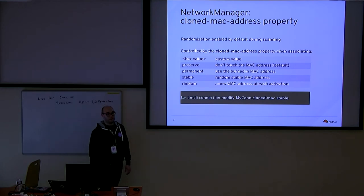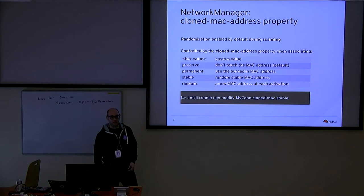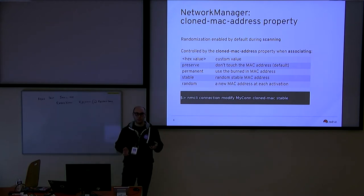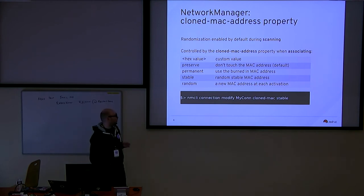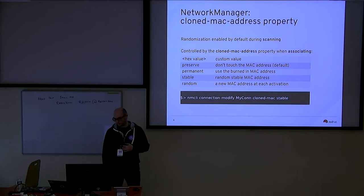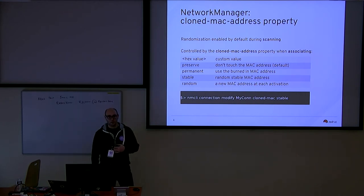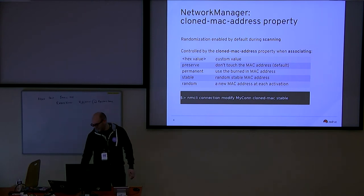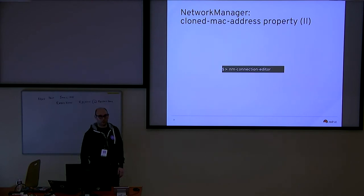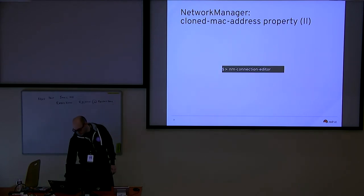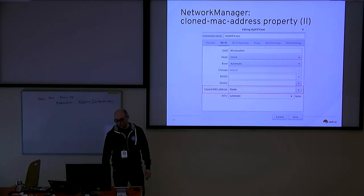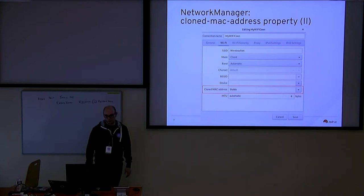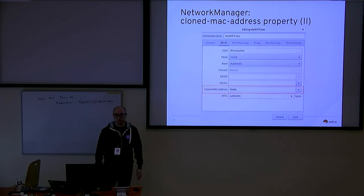The easiest way to change it is to use the nmcli tool. It's as easy as writing: nmcli connection modify, your connection name, then wifi.cloned-mac-address as the property you want to change, and a value that you choose. If you prefer a graphical user interface, you can do that also with nm-connection-editor. You fire it up, pick the Wi-Fi tab — there will be a cloned MAC address field to fill — and you have a drop-down menu where you can pick the presets, or just click in and put your own MAC address.